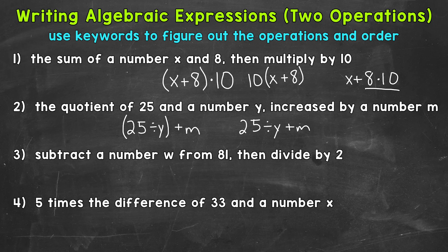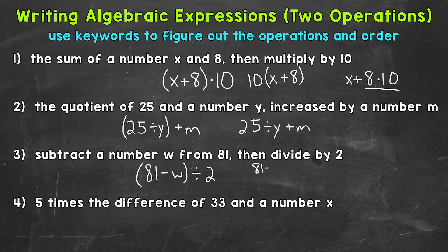Number 3: subtract a number W from 81, then divide by 2. We need to subtract W from 81 first: 81 minus W — we switch that order because we are taking W from 81. Put it in parentheses to show that's what we do first, then divide by 2. Another way to write this: (81 − W) over 2, writing the division as a fraction. That represents division as well.